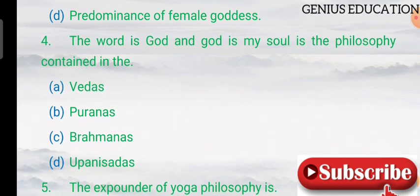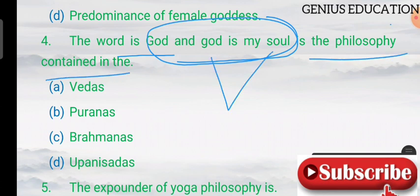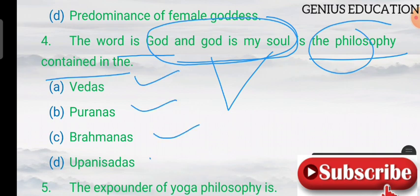Number 4: the philosophy 'God and God is my soul' — this concept is contained in which text? Options are the Vedas, Puranas, Brahmanas, and Upanishads. The answer is the Upanishads.